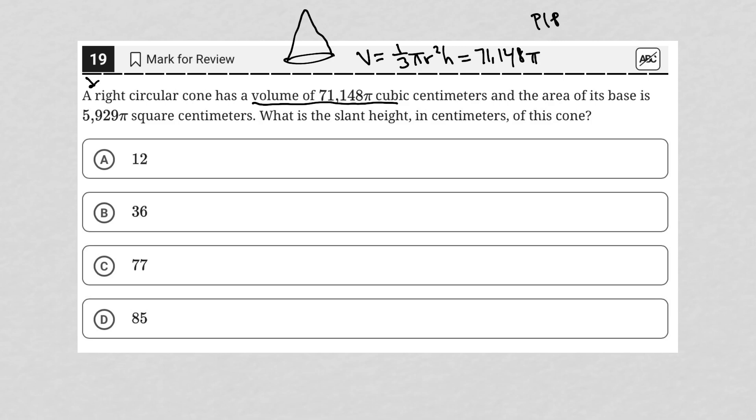It goes on to say the area of its base is 5,929π. Well, the base of a cone is a circle, so the area of a circle is πr². So we know that that πr² is equal to 5,929π. It's important to know that this πr² here is the exact same as this πr² there.